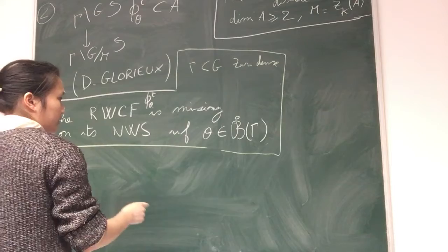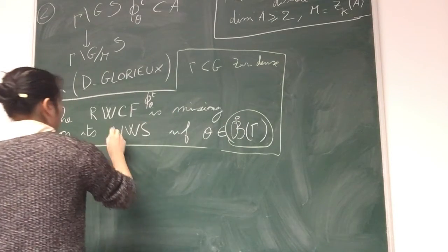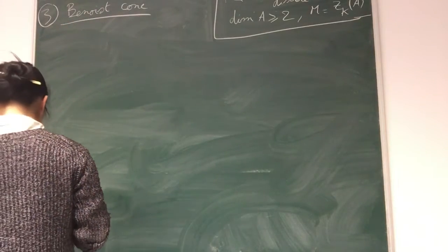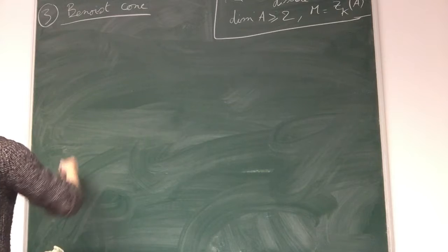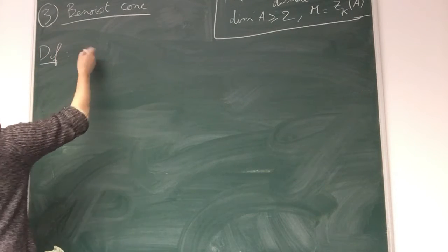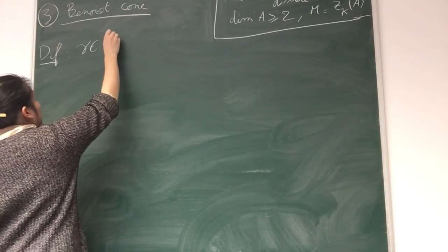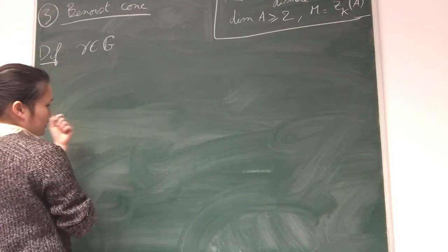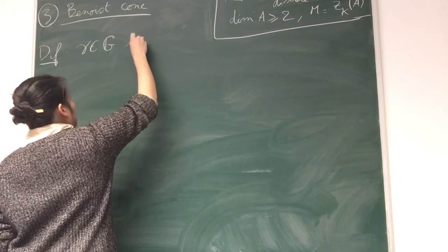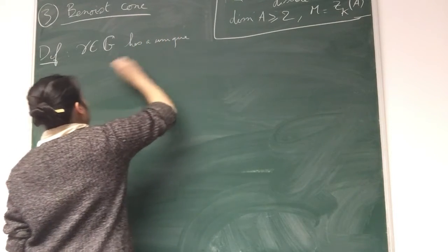Let me define the Benoist cone. First, recall that an element in gamma, in G, since G is semi-simple, has a decomposition, has a unique decomposition into elliptic, hyperbolic, and unipotent parts.